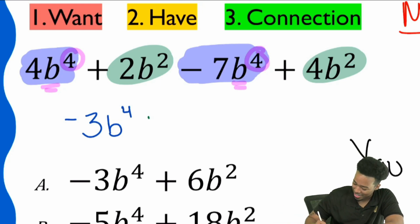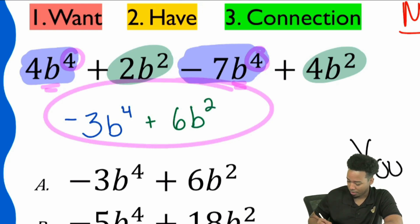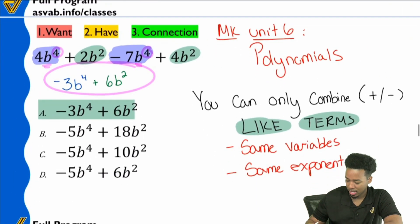I got to get on you about that, but there it is. That'll be 6 B squared. And that's our answer. And that shows itself right here with answer choice A.